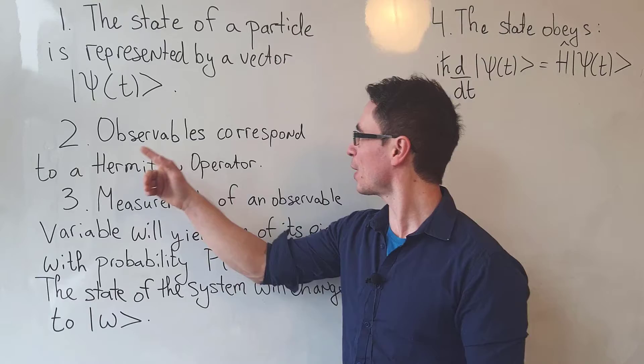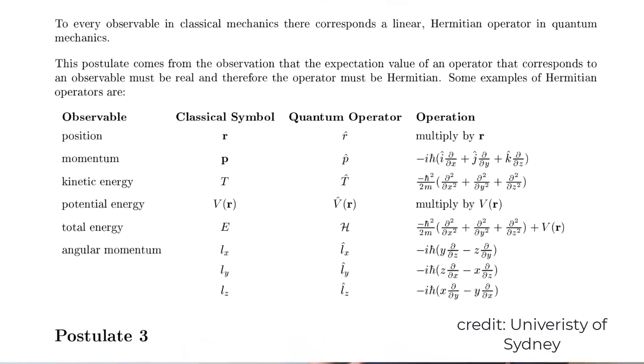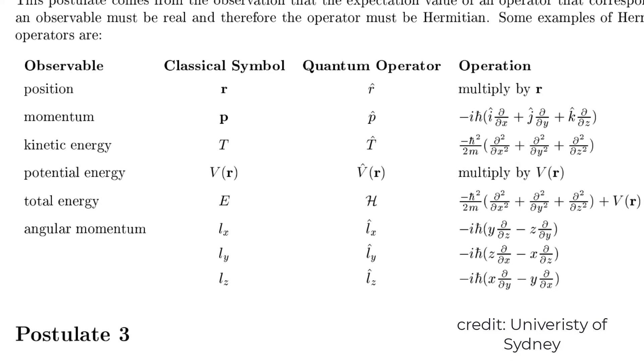Second postulate: observables correspond to a Hermitian operator. So things that we can measure, such as position or momentum, will correspond to a mathematical operator.